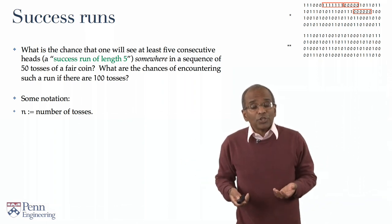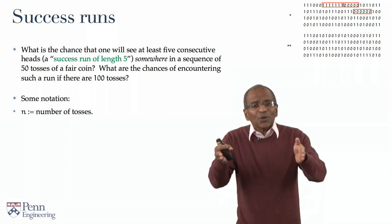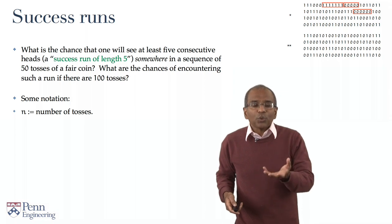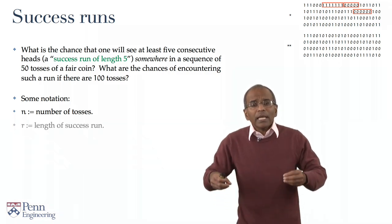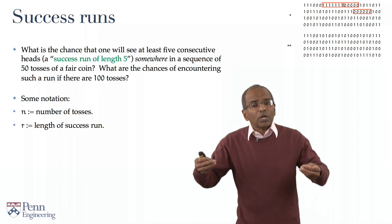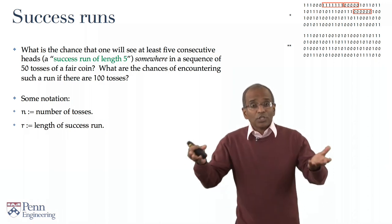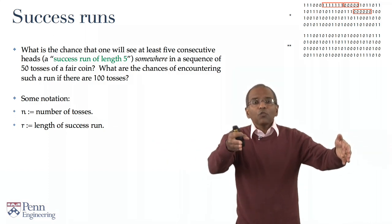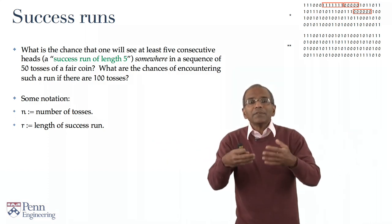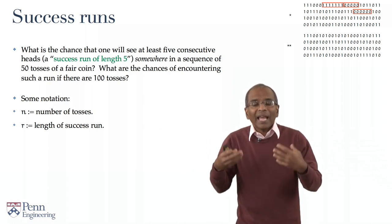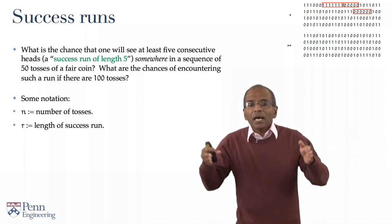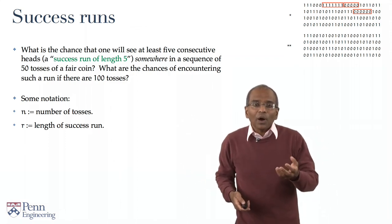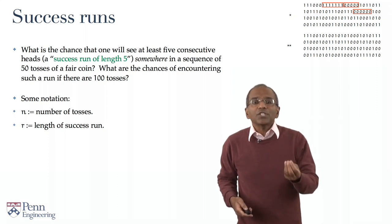What is another parameter of interest? Well, the length of success run that we are interested in. The nominal length of interest to us is 5. But more generally, let us say we are interested in success runs of length r. So, what is the setting? We have tossed a coin n times, and we are looking for a consecutive sequence of at least r heads or successes somewhere in that sequence. And naturally enough, we are interested in the chances of this occurring.